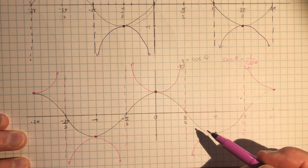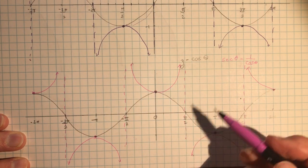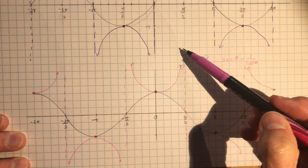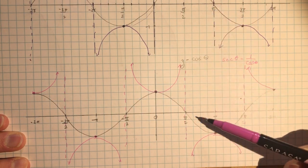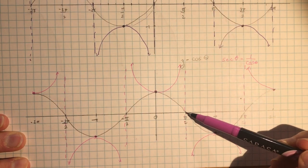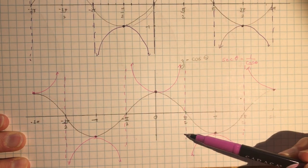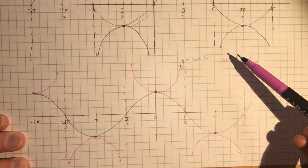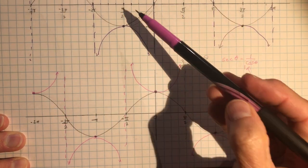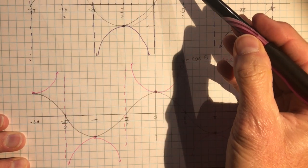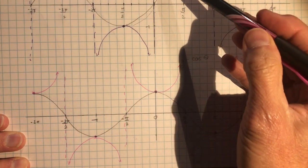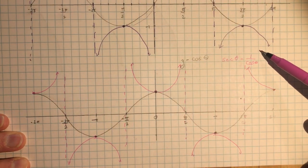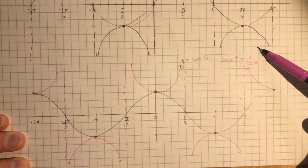Let's look at these again because they're so similar. We have vertical asymptotes at the points where sine theta or cosine theta was zero. It still has the same period — one complete cycle between two asymptotes — so the period is still 2π.